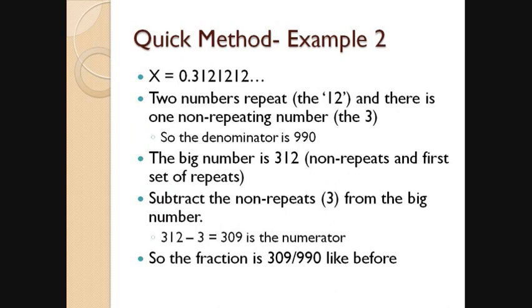For our second example, we have 2 repeating numbers, the 1 and the 2, and the non-repeating number, which is the 3. So we have 2 repeating numbers, so we write 2 9s. We have 1 non-repeating number, so we write a 0 afterwards. Our denominator is 990. For our numerator, we have the non-repeating 3 and the first set of repeats, the 12. We treat 312 as one big number. Then we subtract the numbers that aren't repeating, just the 3. So we do 312 minus 3, which equals 309. So we have our numerator and denominator: 309 over 990, just like before.